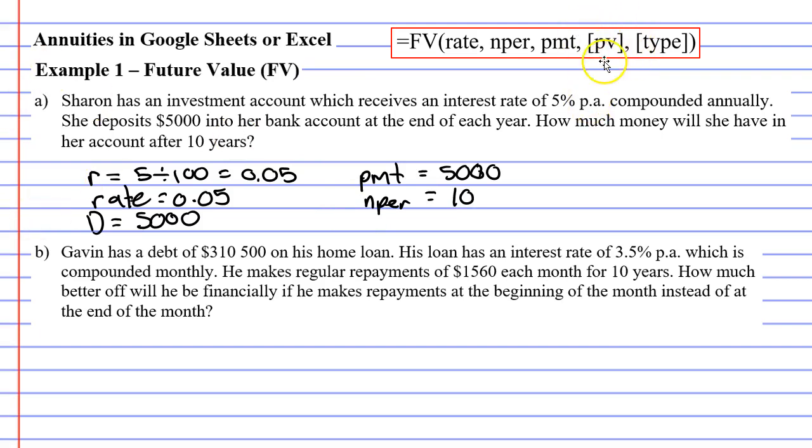There are also some other arguments here. You'll notice that both of them are within square brackets. That means that these arguments are optional. We don't have to use them. I'll explain what they mean anyway.